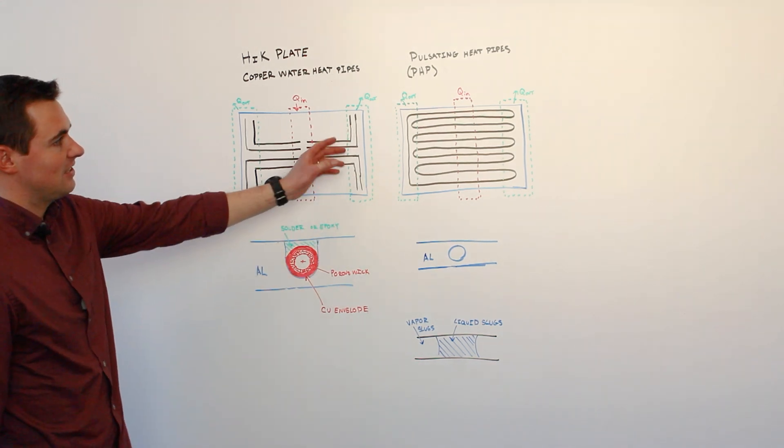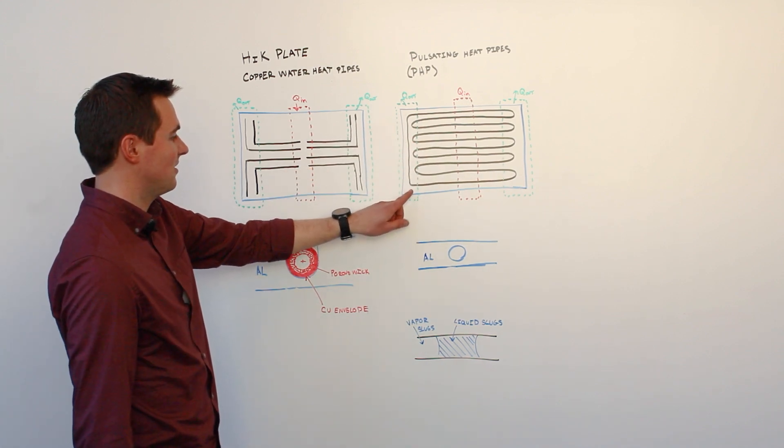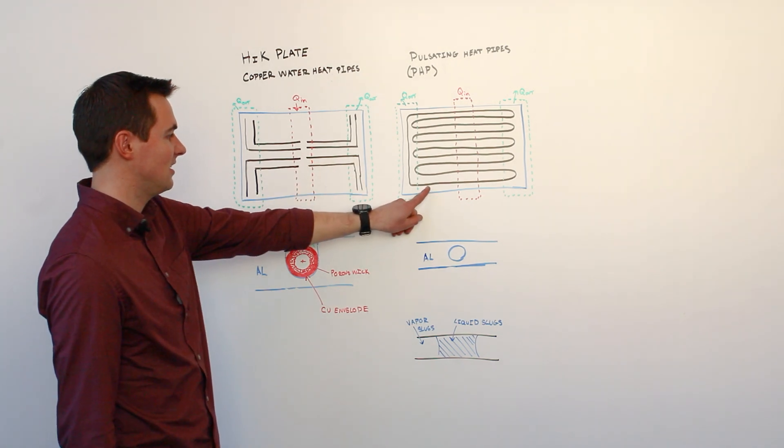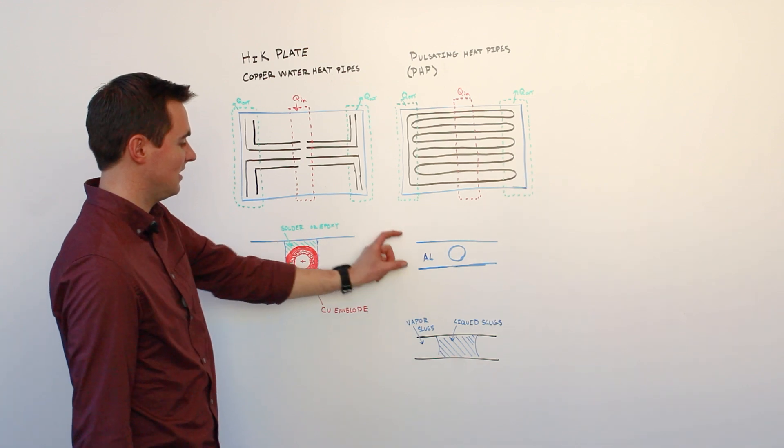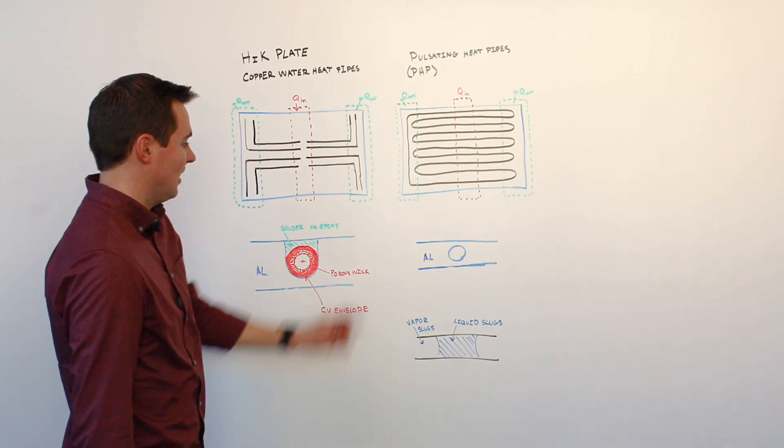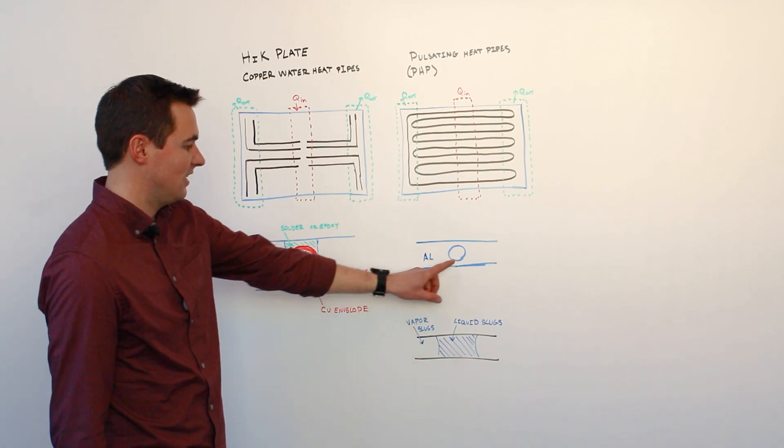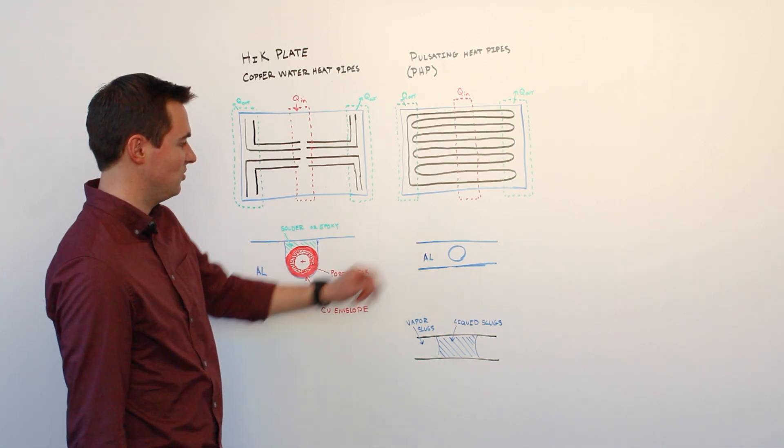Another technology is pulsating heat pipes. Again this shows a similar form factor, but in this case rather than discrete heat pipes we have a single continuous serpentine channel which is embedded within the aluminum plate. You can see that this diagram has many fewer components. It's simply a hollow serpentine channel which is manufactured within an aluminum plate.